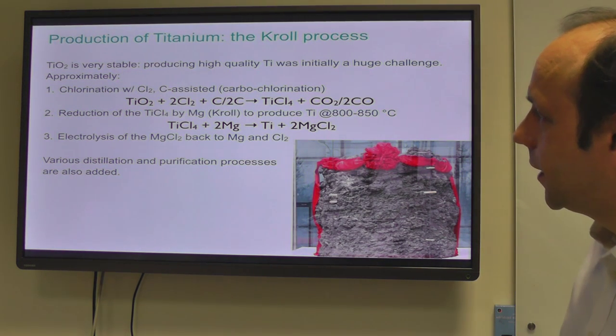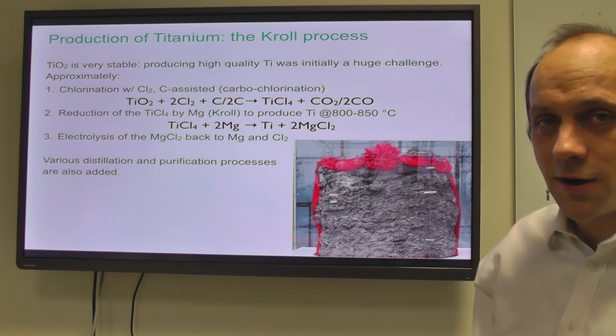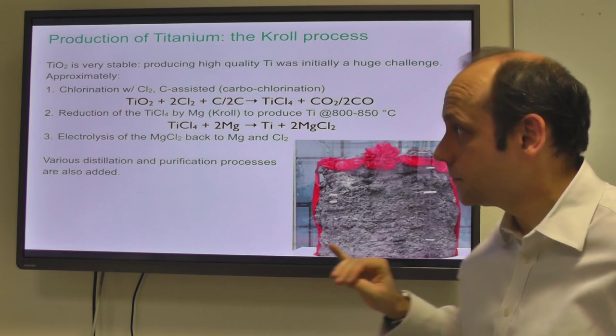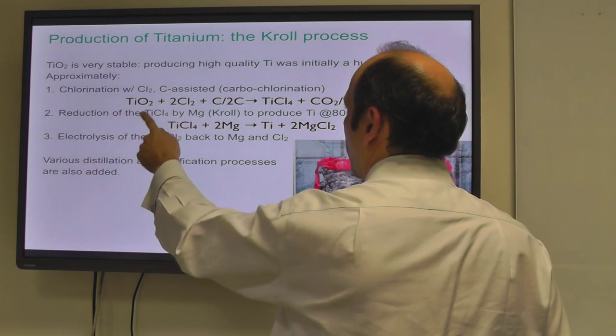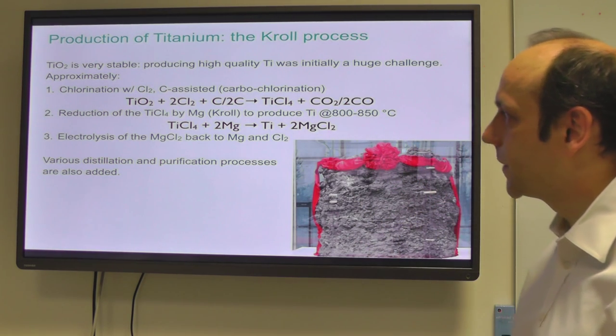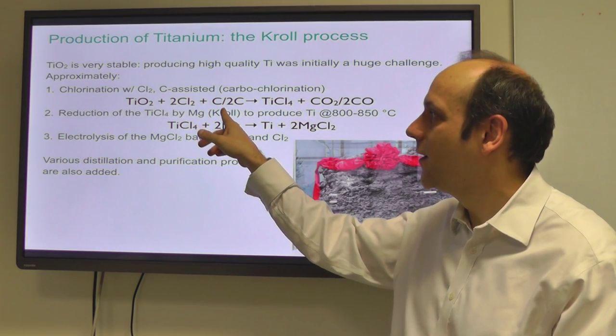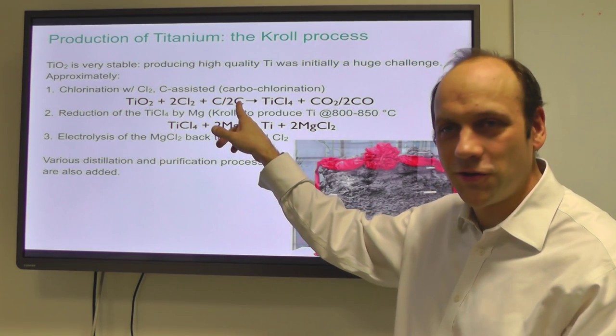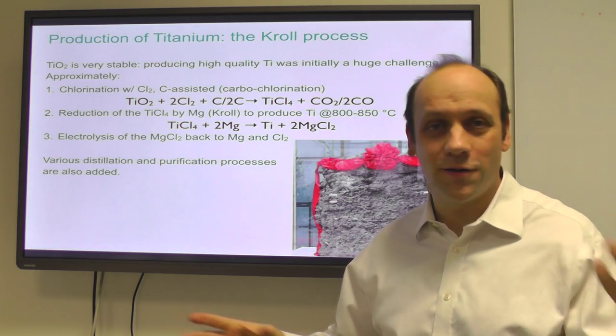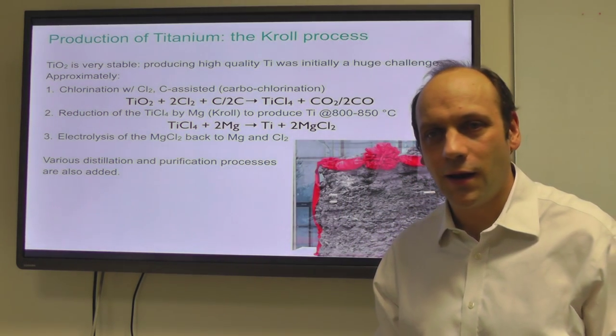The Kroll process for producing titanium goes as follows. First, we carbochlorinate our titanium, so we mix it with carbon and pass chlorine gas over it, and we produce titanium tetrachloride TiCl4 and CO2 or CO. How much carbon you're using depends on the temperature and oxygen partial pressure. The point of using carbon here is more efficient than burning it in a coal-fired power station. You're using the carbon to make CO2 directly, so you get the thermodynamic boost from the carbon.